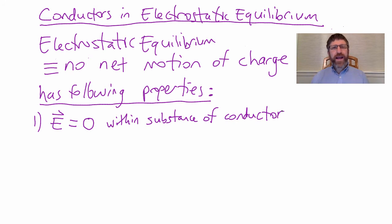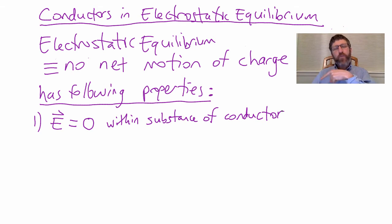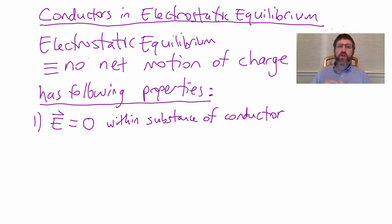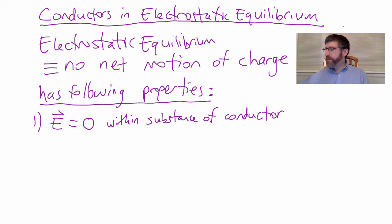If you want a proof of that, there's a link right to that spot in the lecture. It's an important thing to review to understand how we know that when a conductor is in electrostatic equilibrium, the electric field is zero within the substance. You can actually have an electric field inside a hollow conductor if there's a charge suspended in there, but in the substance of a conductor in electrostatic equilibrium, the electric field must be zero.